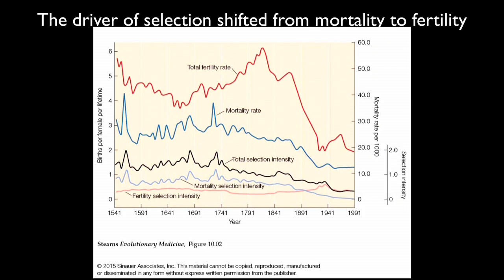Across this transition, the driver of selection on humans shifted from mortality to fertility. This diagram plots births per female per lifetime — the total fertility rate — alongside the mortality rate per thousand, as well as selection intensities: the total potential selection intensity caused by variation in both mortality and fertility, broken down into the mortality component and the fertility component.